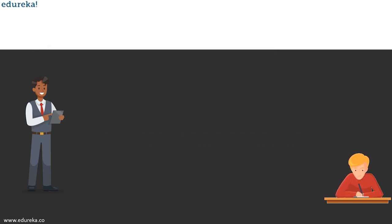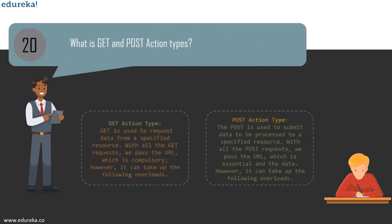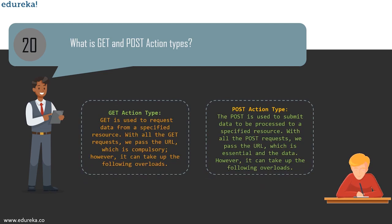The next question is: what are GET and POST action types? GET is used to request data from a specified resource — with all GET requests, the URL is compulsory, but it can take various overloads. POST is used to submit data to be processed to a specific resource — with all POST requests, the URL and the data are essential, and it can also take many overloads as well.